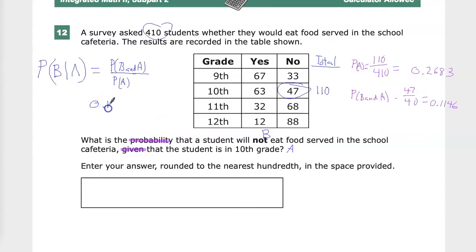So 0.1146 divided by 0.2683. This is saying, okay, if you have this probability in your head already, I want to further define that to include just situations where this applies. Let's go over here and do that.